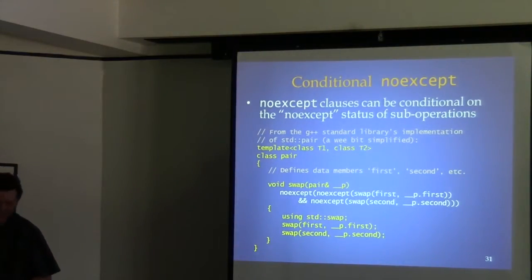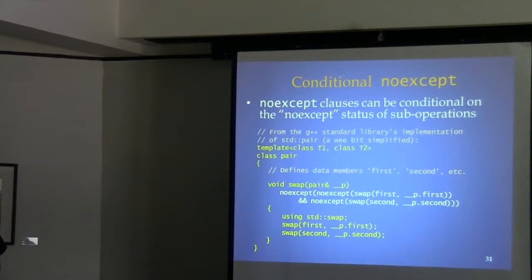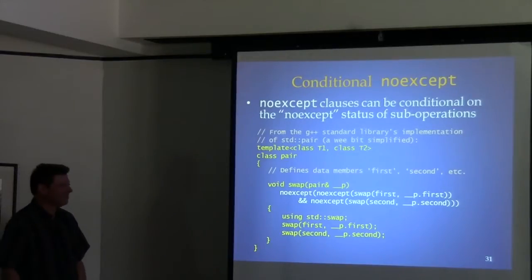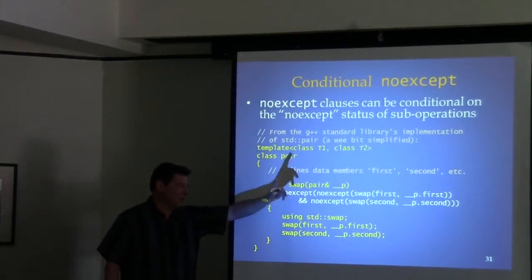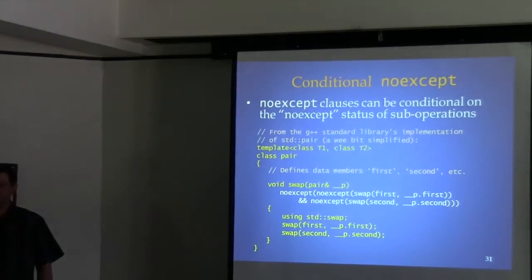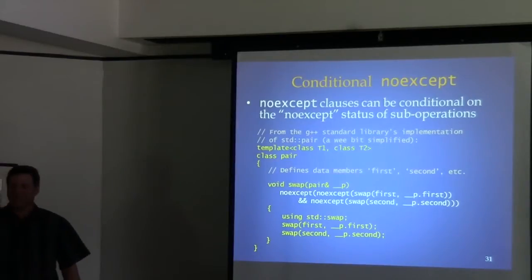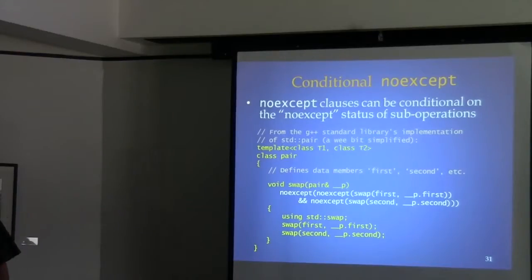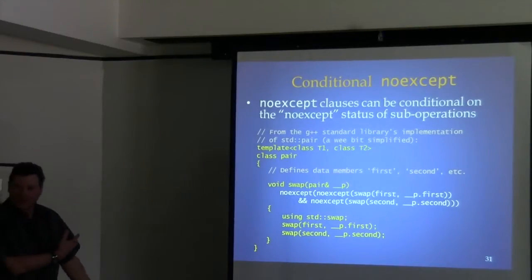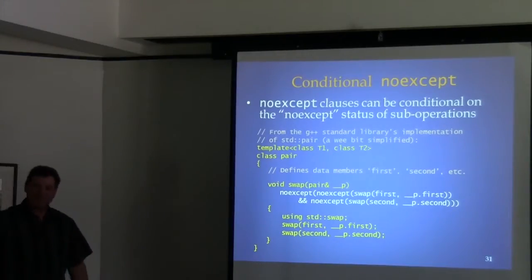Question about this swap example: which swap is being referred to in the noexcept condition? That's really beyond me to answer on the spot — it's a great question about ADL in these decorators. I've never thought about that whole aspect of it. This is an overview, not a deep dive.